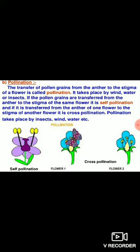Reproduction in flowering plants consists of two levels: pollination and fertilization. Pollination is the transfer of pollen grains from the anther to the stigma of a flower. Pollination is of two types — self-pollination and cross-pollination. Self-pollination occurs only in bisexual flowers, but cross-pollination may occur in both bisexual as well as unisexual flowers.